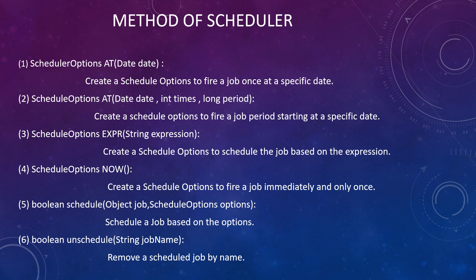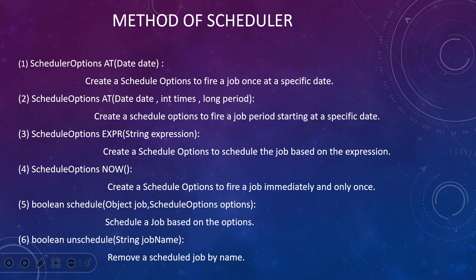With the add method you need to mention date, times, and period. It will also execute only once, but you need to mention the times and periods. Through expressions also we can execute. Expression means we go to Google where there are applications to convert a normal date into a cron expression.